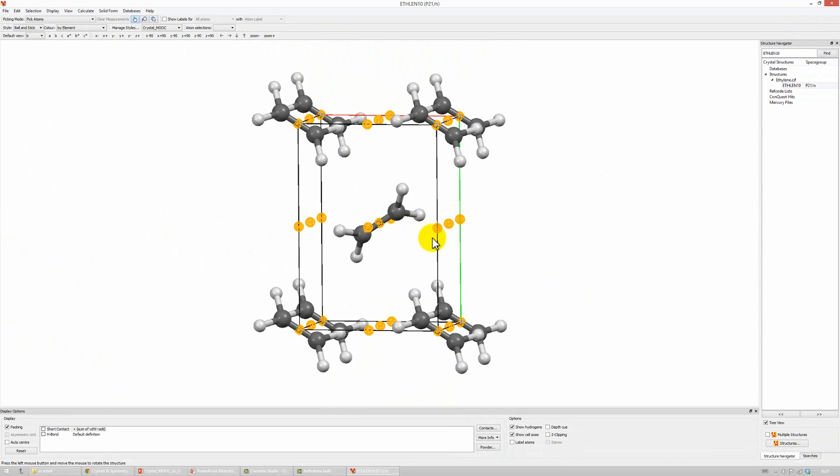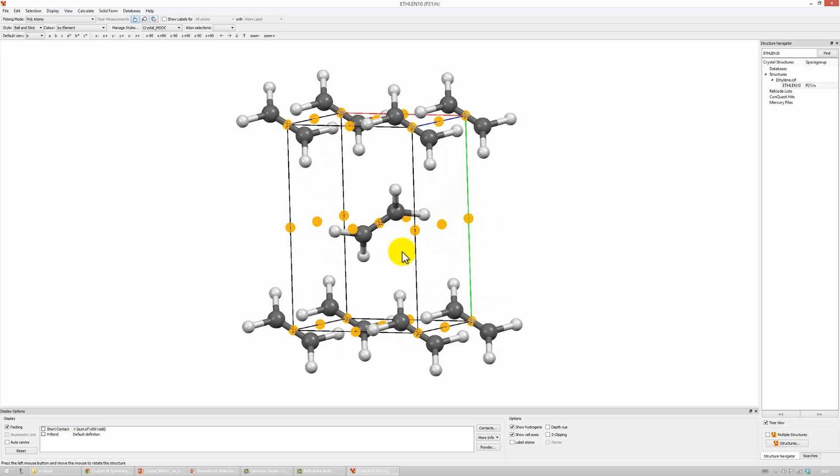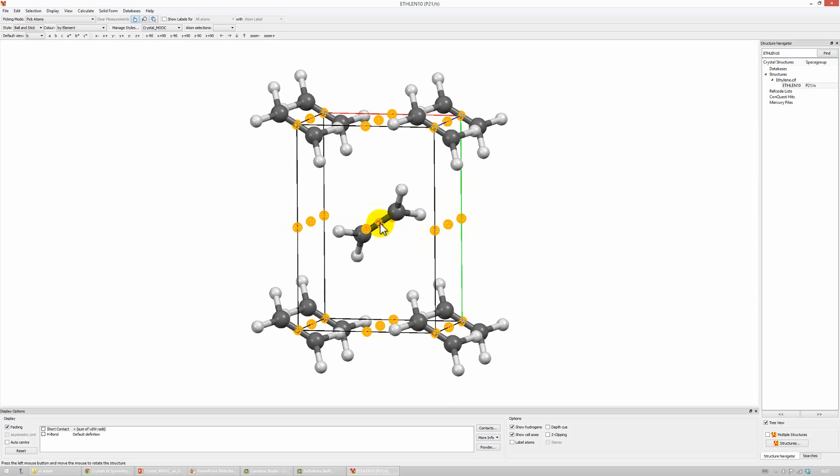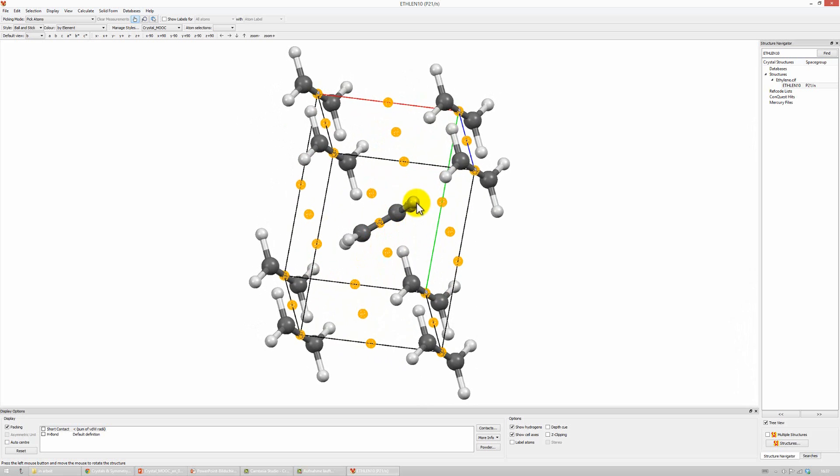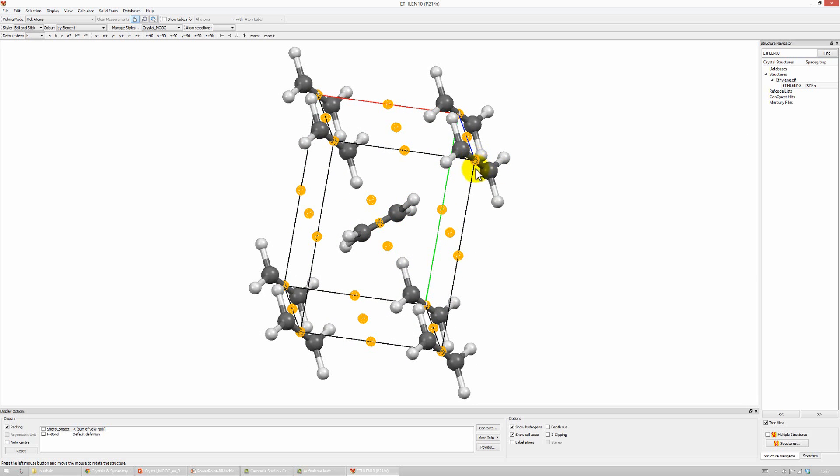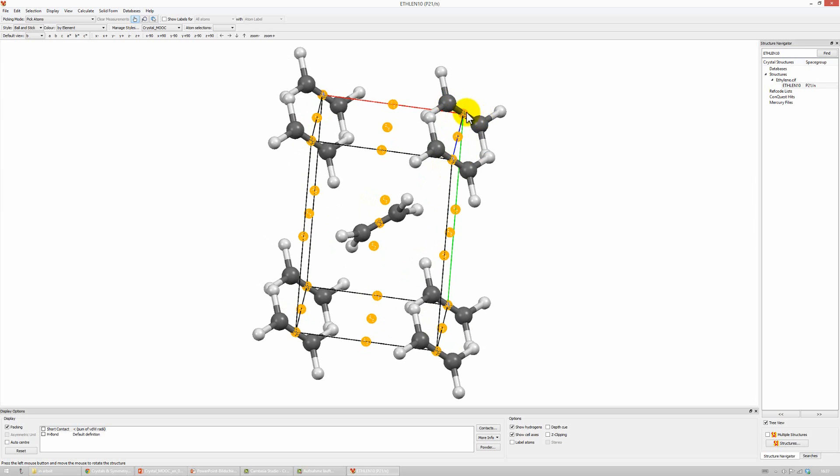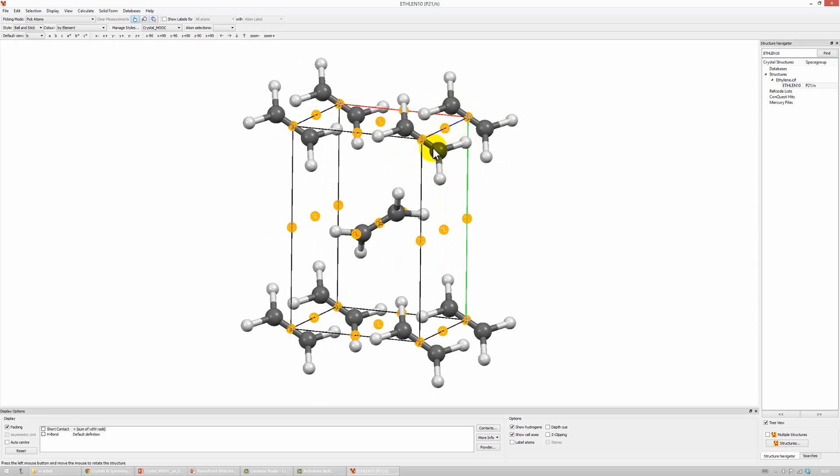Ok, now we see that inversion centers are present at all corners, at all midpoints along the edges, at all centers of the faces, and there is, of course, also a center of inversion in the center of the cell. Which is also in the center of our ethylene molecule, and this is interesting. It is also valid for the other molecules at the edges of the cell. Always, the center of inversion is right in the middle of every ethylene molecule. And this means that the one half of our molecule is inverted at this center of inversion, to generate the other half of our molecule. And this means that this center of inversion is not only a center of inversion of the crystal structure, but simultaneously a center of inversion of the molecule. These two centers of inversion fall together.